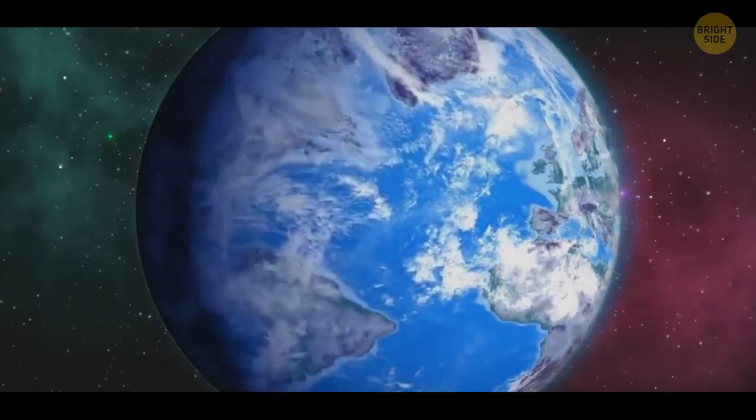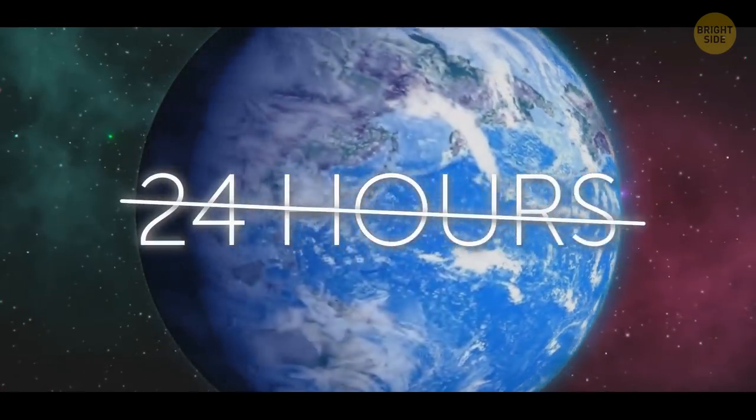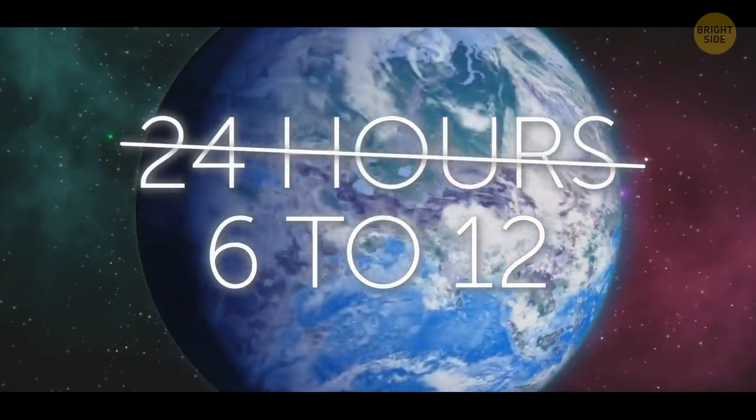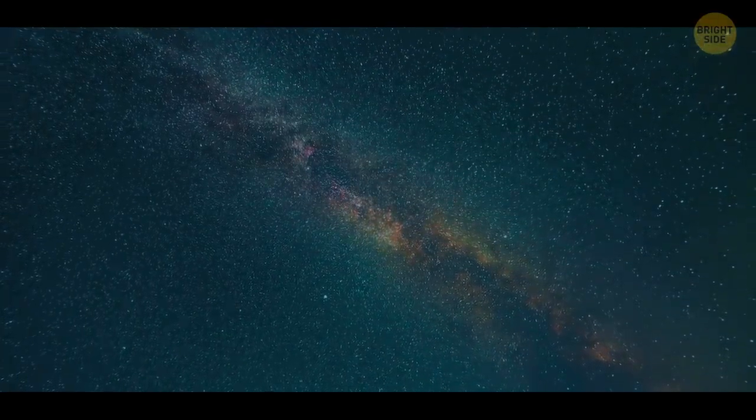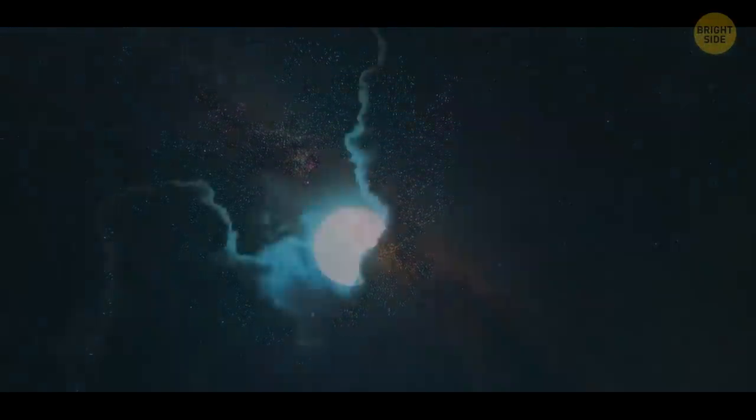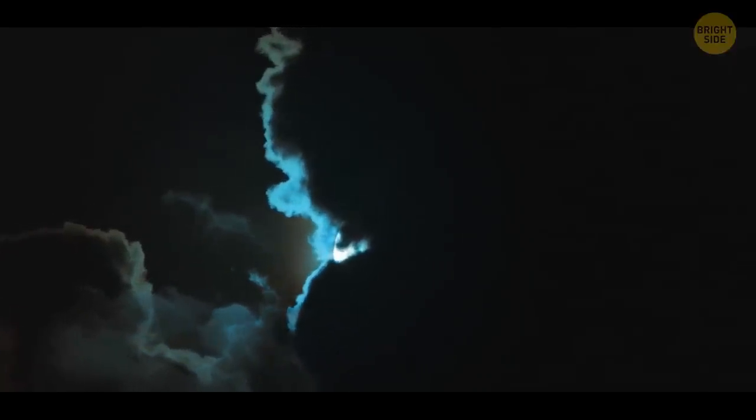The Earth would start spinning a lot faster. So instead of 24 hours in a day, we might have anywhere between 6 to 12. And even though nights would be a whole lot shorter, they'd also be darker than ever. When we see the Moon, we're actually seeing the Sun reflecting its light off the Moon. And even a new Moon is usually the brightest object in the night sky.